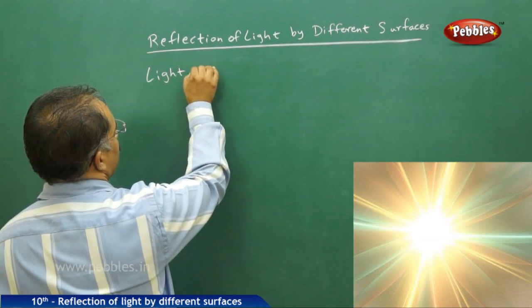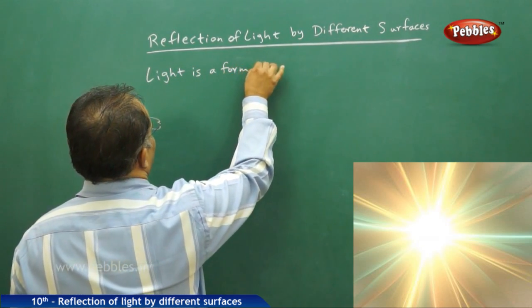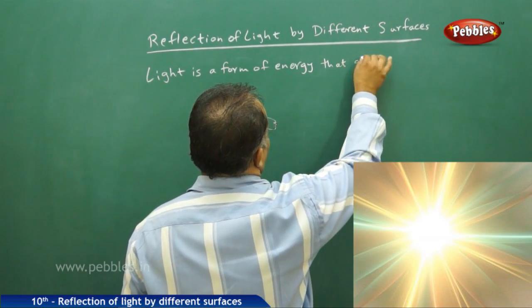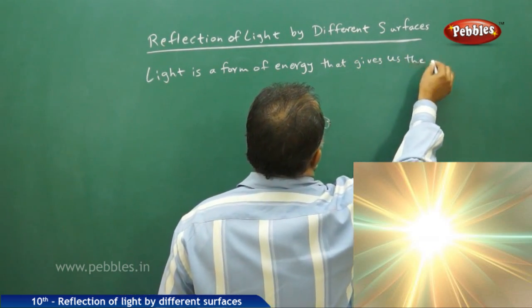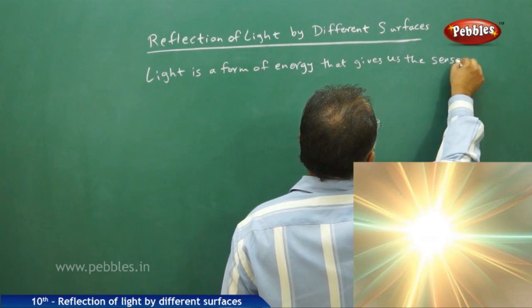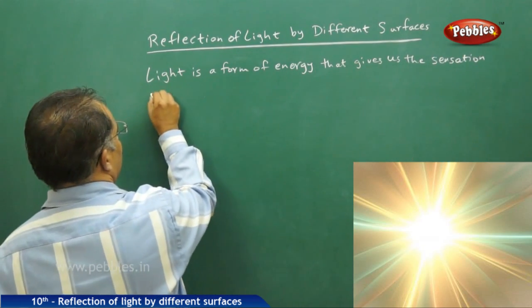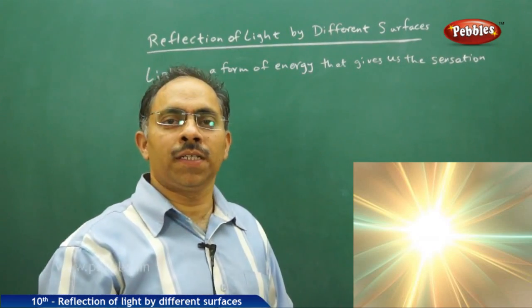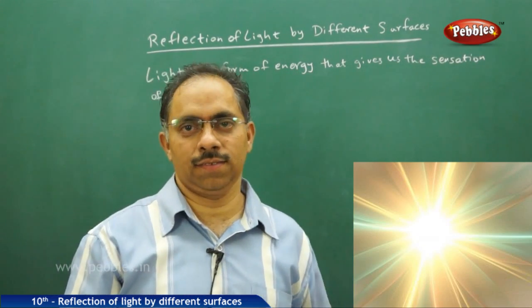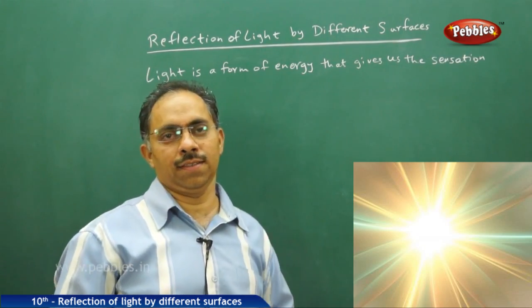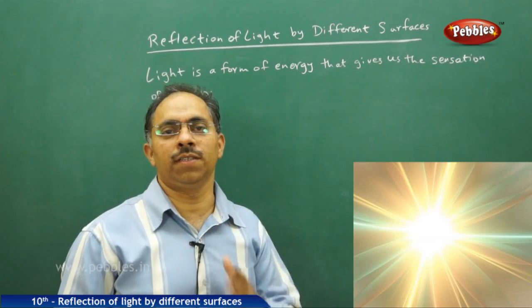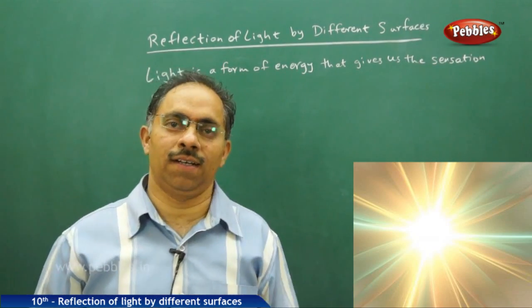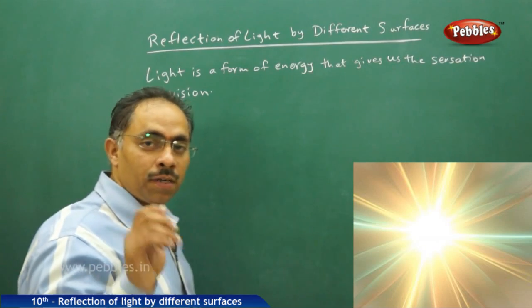Light is a form of energy that gives us the sensation of vision. The foremost important property of light is that it will travel in straight line. Whenever we use the word light, being a form of energy, we mostly use the word 'propagate.' Light propagates in straight lines, or light travels in straight lines. That is one of the important properties of light.